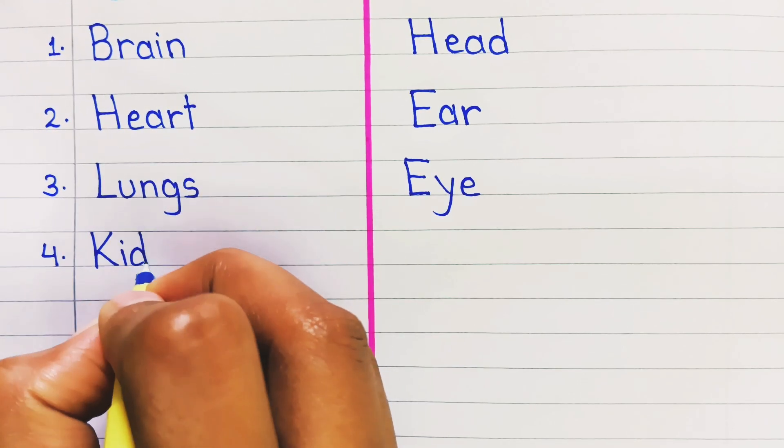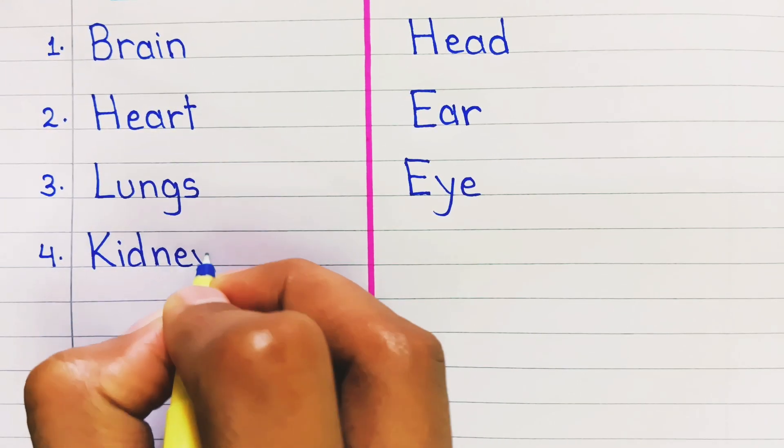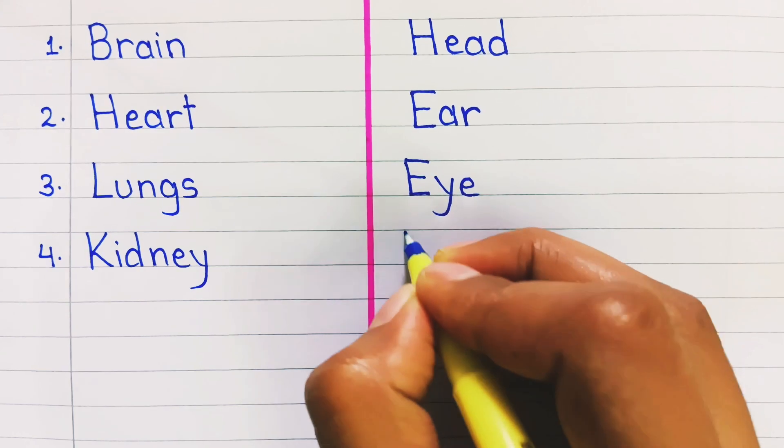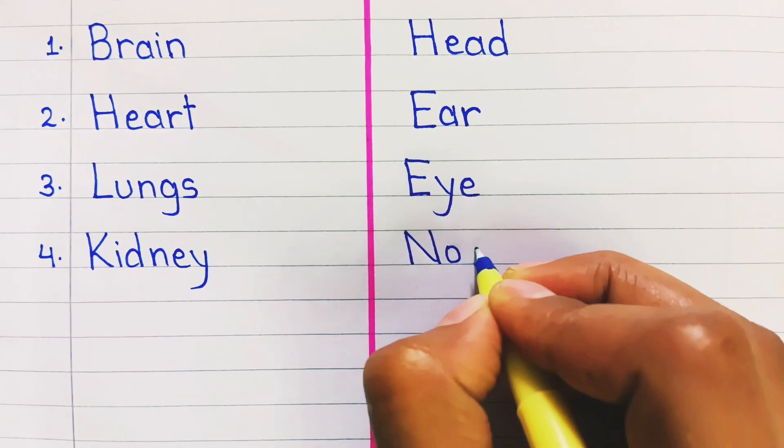4. Internal organ is kidney. External organ is nose.